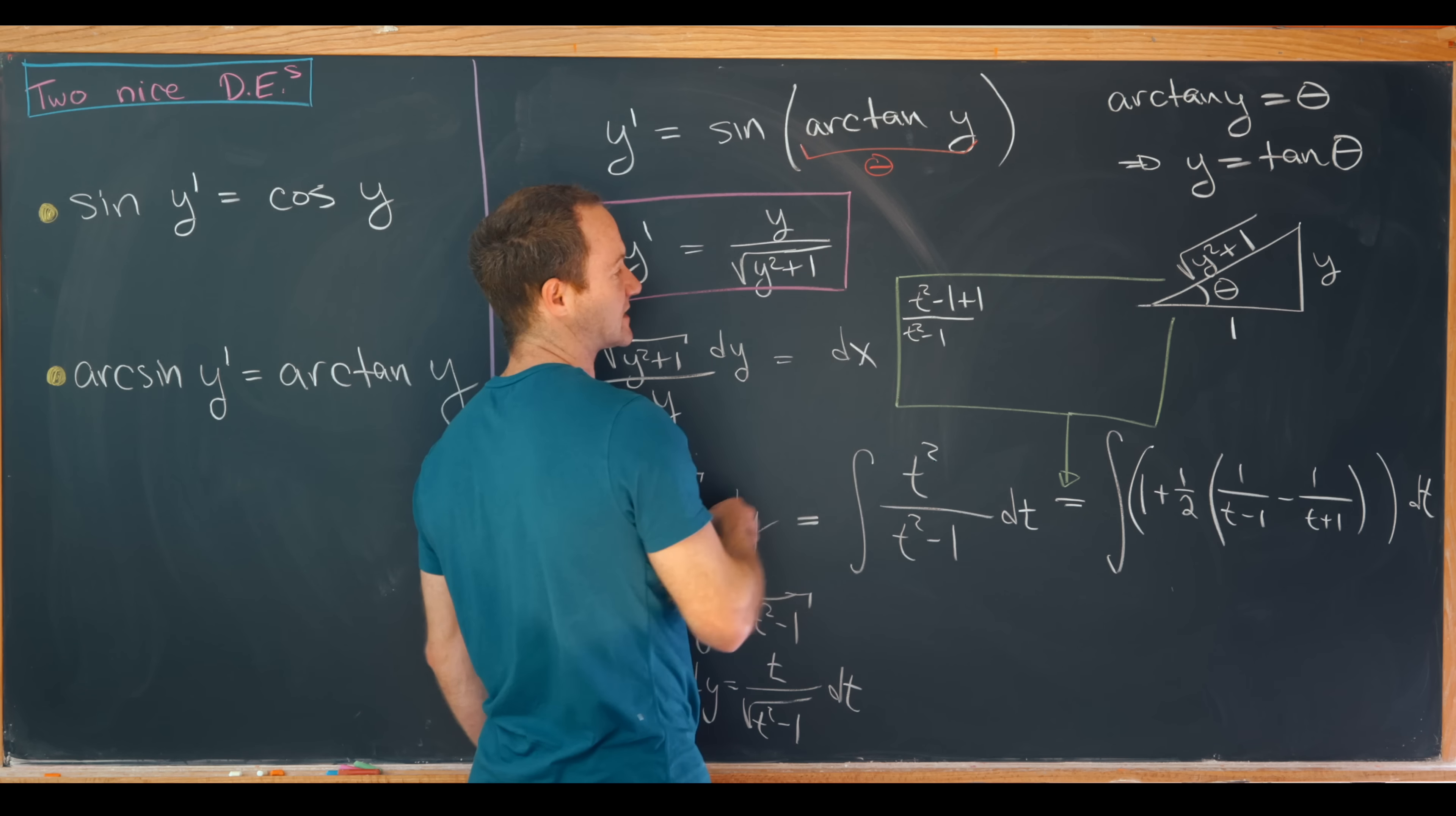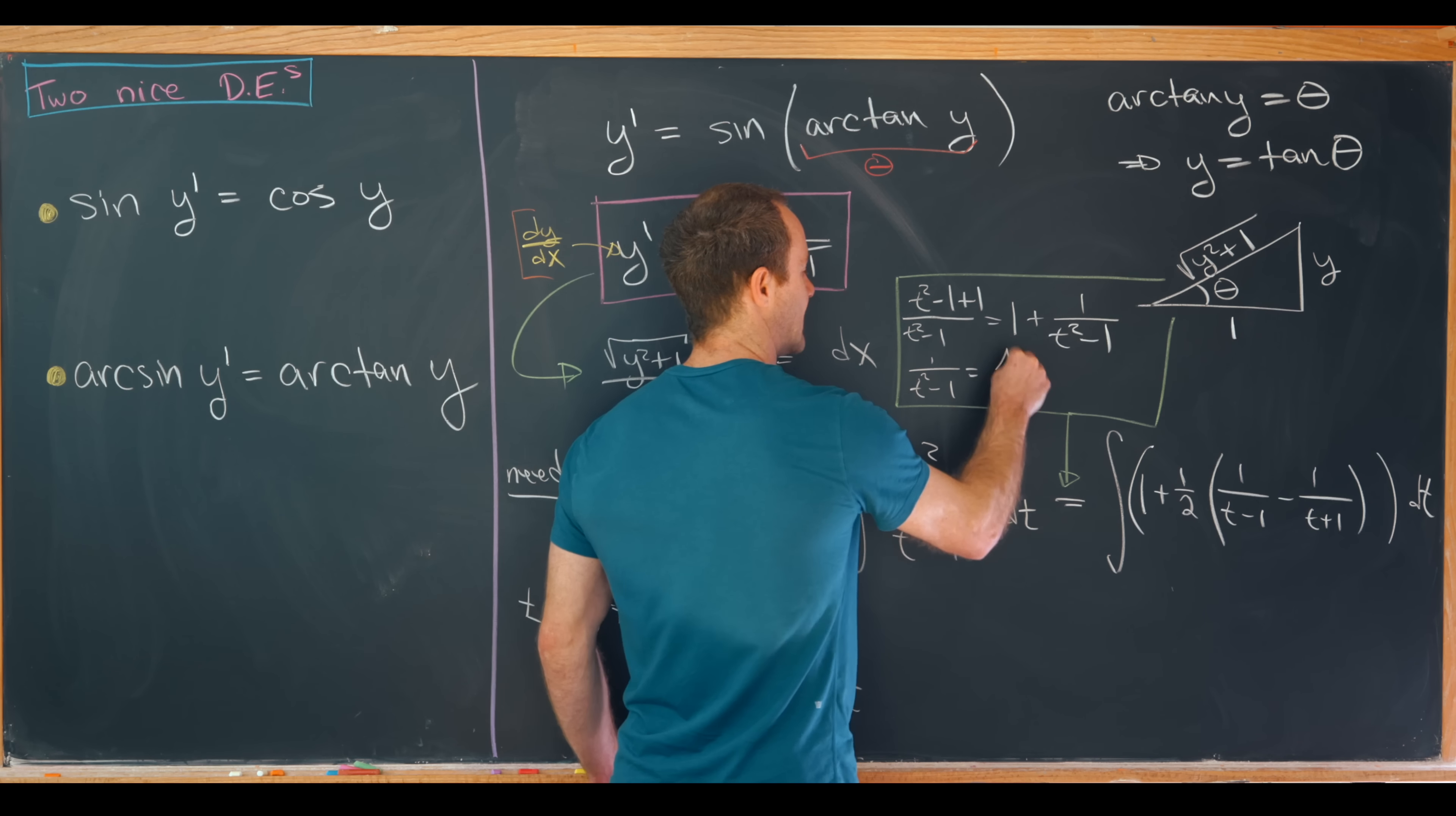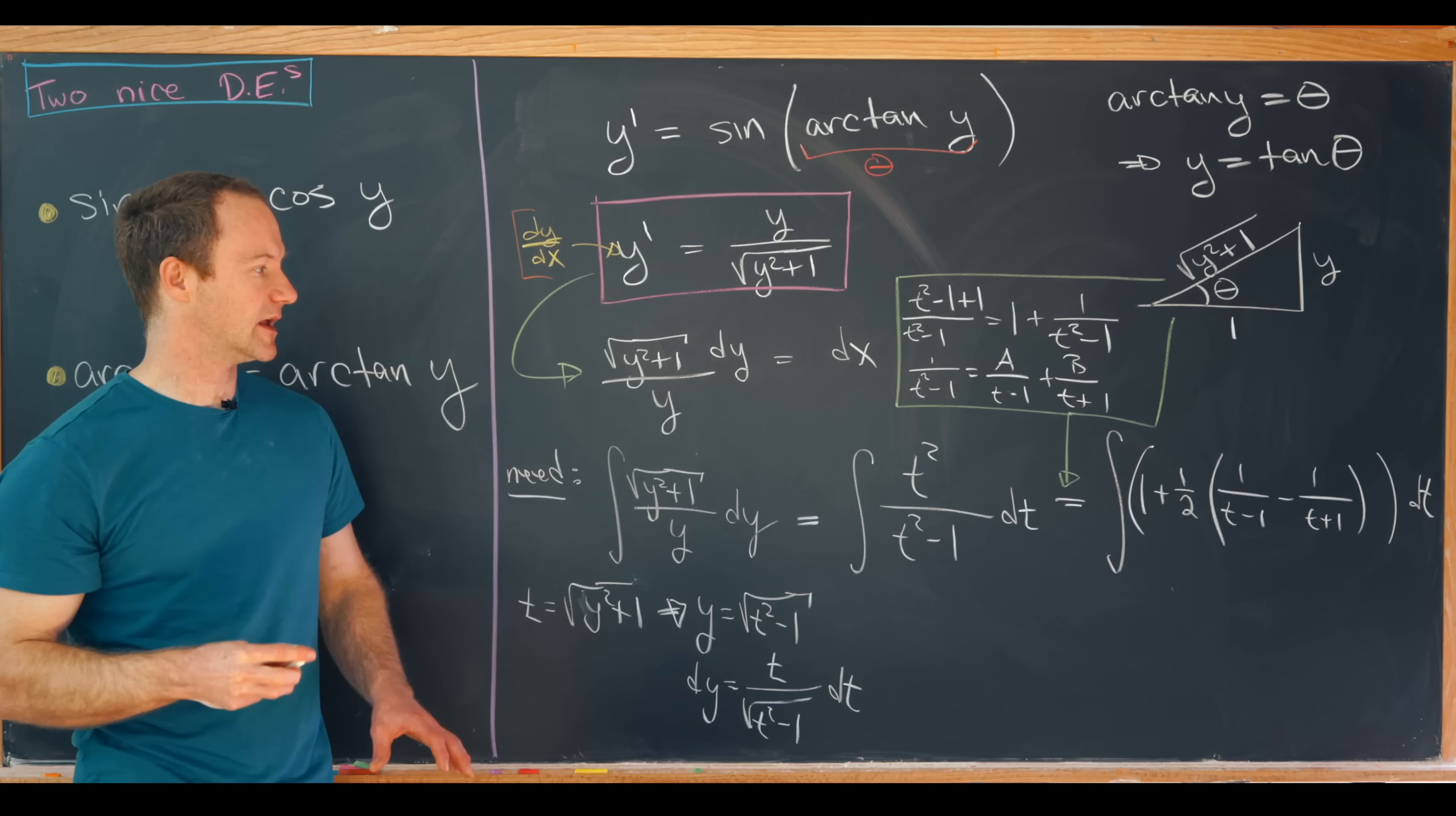And then we can take this 1 over t squared minus 1 and rewrite it as a over t minus 1 plus b over t plus 1 and do the standard calculation for partial fraction decomposition.